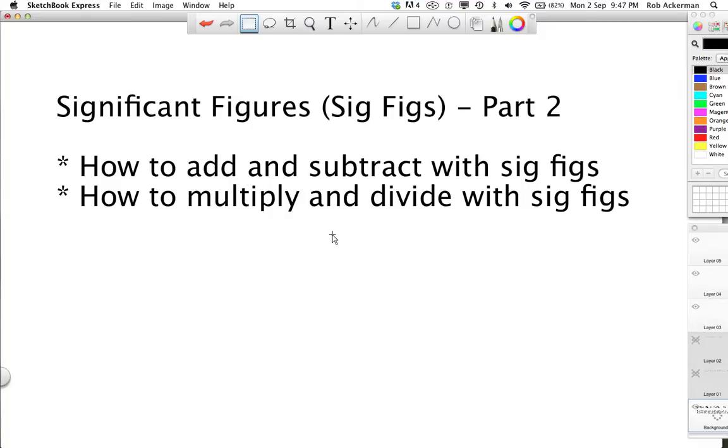Today what we're going to talk about is once you know how to count the number of sig figs in a number, and once you're comfortable with the concept, what do you do with these numbers? So for example, how do you add, subtract, multiply, and divide with them? Lucky for you, what you do when you're adding and subtracting is the same thing. You follow the same rules for this, and what you do when you're multiplying and dividing is also the same rule. So you really only have to learn two things today. Let's get started.